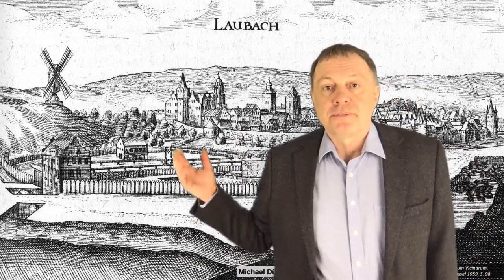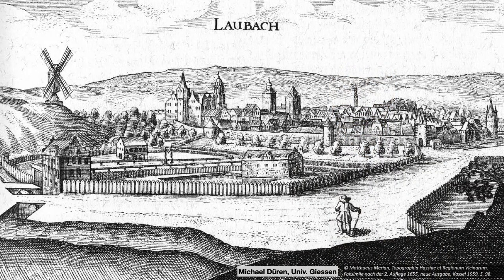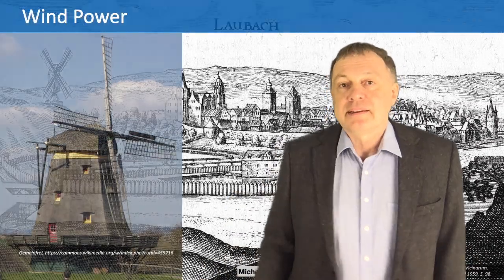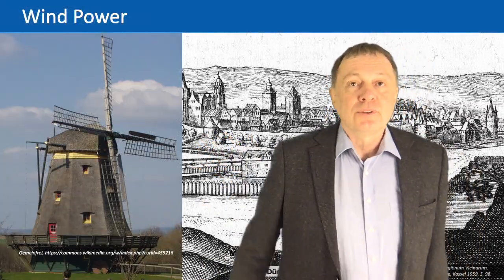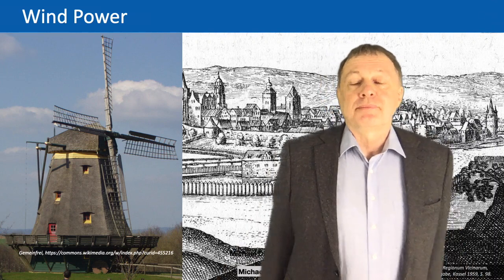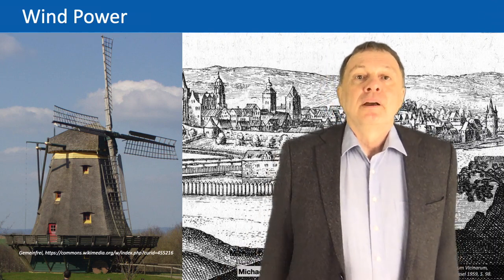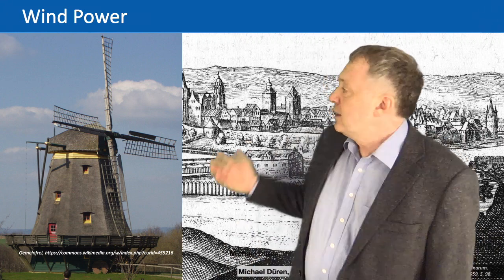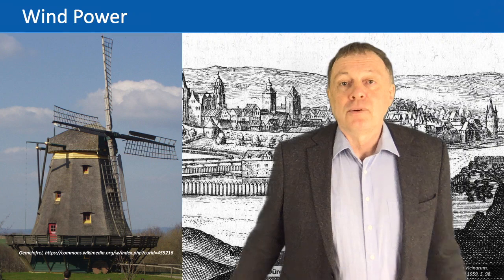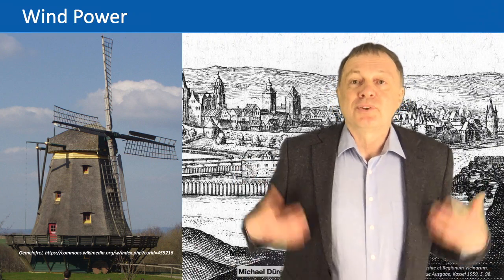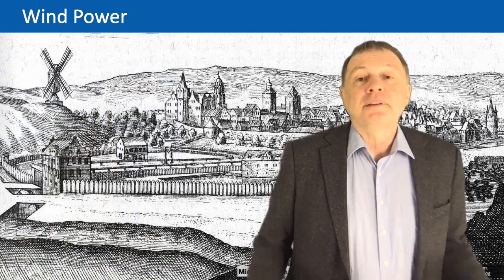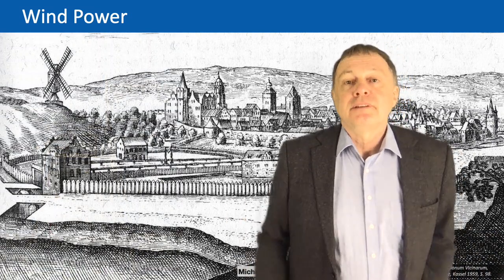Here you see a picture of Laubach, a small town close to Gießen, with the windmill on the hill. This particular windmill does not exist anymore, but there is an example of a windmill close to Gießen in the Hessen Park if you want to see one — it's really interesting to see all the mechanics inside. In the old days, windmills were used for milling flour, pumping water, or doing mechanical hammering work, and they were very common before steam engines and fossil fuels arrived.